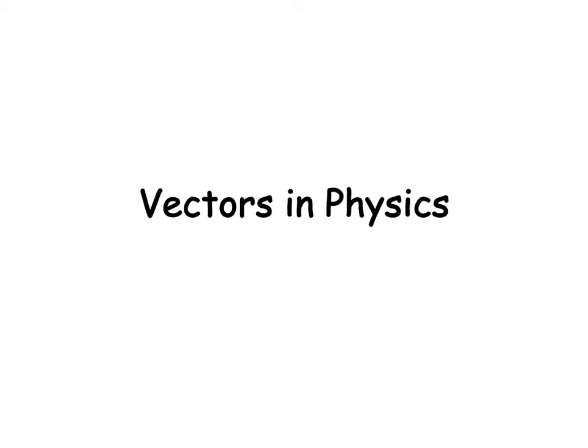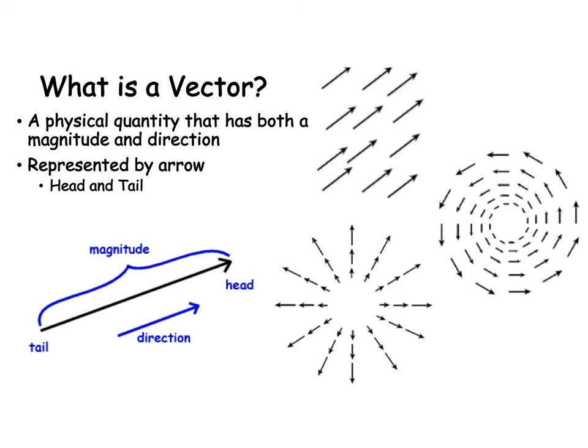Okay, so let's have a little bit of a discussion about vectors in physics. We've already talked about the fact that vectors are a physical quantity that has both a magnitude and a direction. It's represented by an arrow, as you see, and the length of the arrow tells you the magnitude. So if the arrow's longer, it's greater magnitude, shorter, less magnitude.